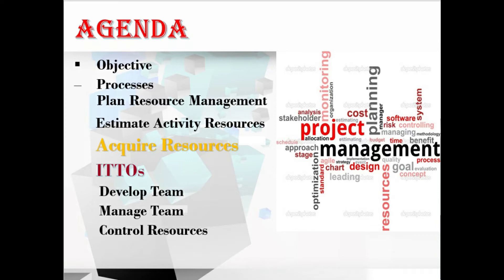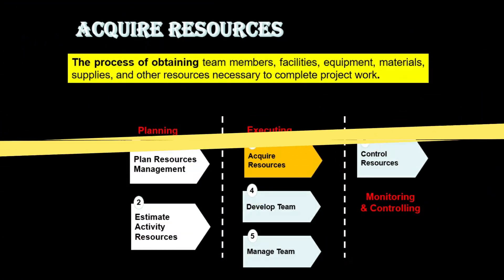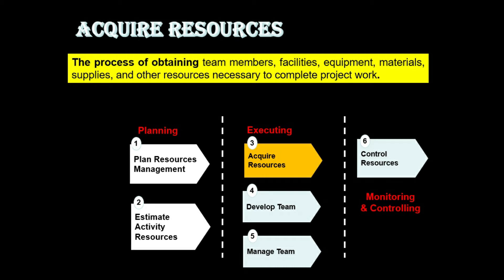Acquire Resources is the third process in project resource management. It is defined as the process of obtaining team members, facilities, equipment, materials, supplies, and other resources necessary to complete the project work. The main key benefit of this process is that it outlines and guides the selection of resources and assigns them to their respective activities. Let's quickly move to the ITTOs of this process.